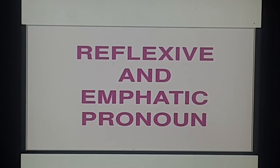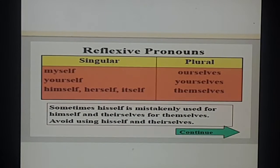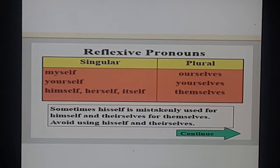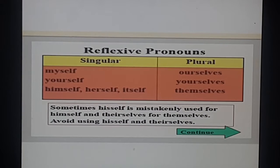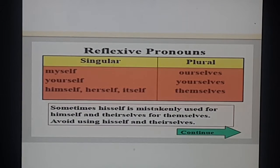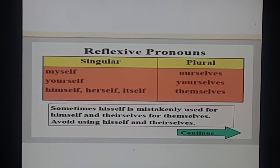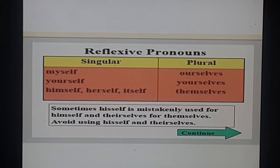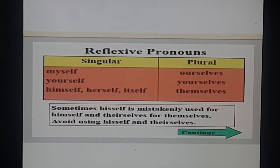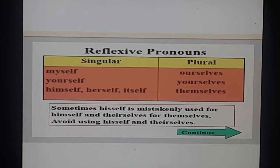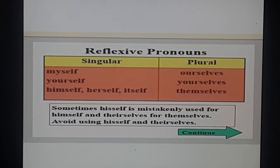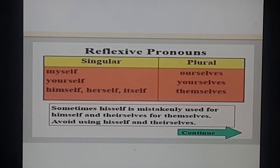We are doing them together - reflexive and emphatic pronouns. See these words here: words like myself, yourself, himself, herself, itself. In plurals we have ourselves, yourselves, themselves. The words are the same and there is something common between them - it is the suffix 'self'. They are suffixed with 'self' in singular and in plural we have 'selves'. Pronouns having 'self' at the end - this is the easiest way to identify them.